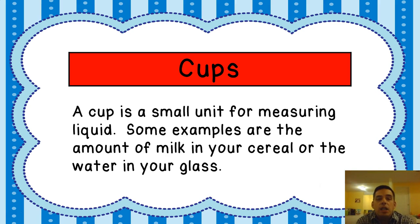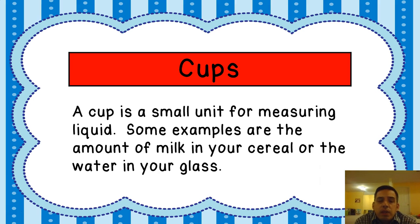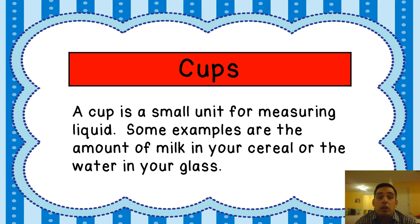Let's start with cups. A cup is a small unit for measuring liquid. It's about 8 ounces — it's not very big. Some examples are the amount of milk that you put in your cereal, or if you get yourself a glass of water, you usually drink about a cup. It's not a lot. If you were trying to fill something large with a cup, it would take you a very long time to do it.